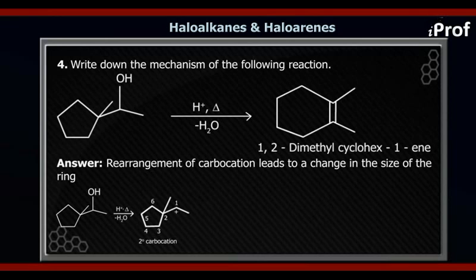To make it easier, let us number these carbons. The carbon having the positive charge, let us number it as one. On the ring, the carbon which has the methyl group, let us number it as two, and continuing the numbering: three, four, five, six. Ring expansion in this case can take place either from the bond between C2 and C6, or from the bond between C2 and C3 — both are identical.